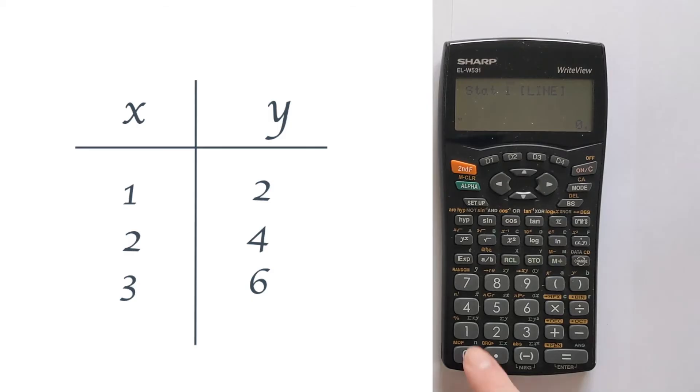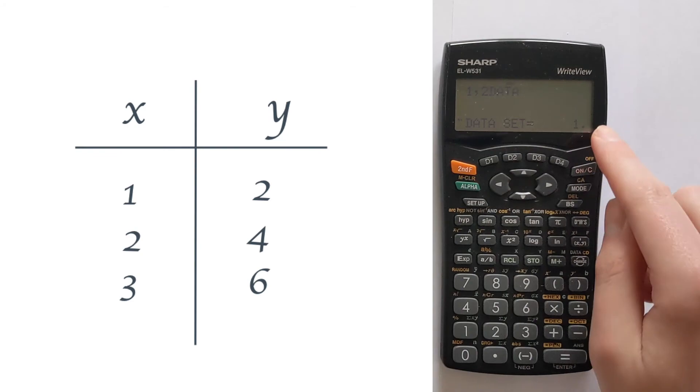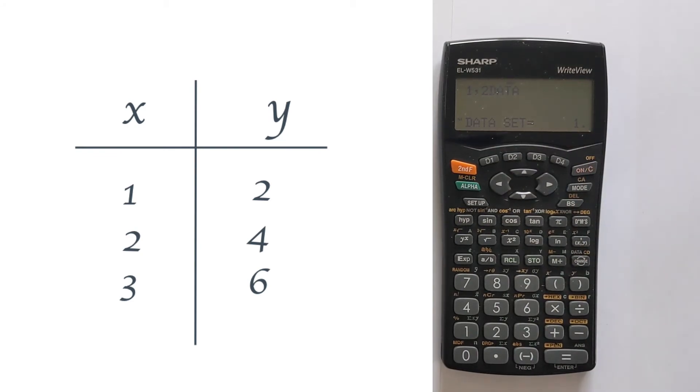Let's start by inputting the first point. We press one, then we choose comma, and then we've got two. And then we press change, and that's going to save it in the memory. This data set equals will keep track of how many points you have inputted, so you can make sure you haven't missed any data points.